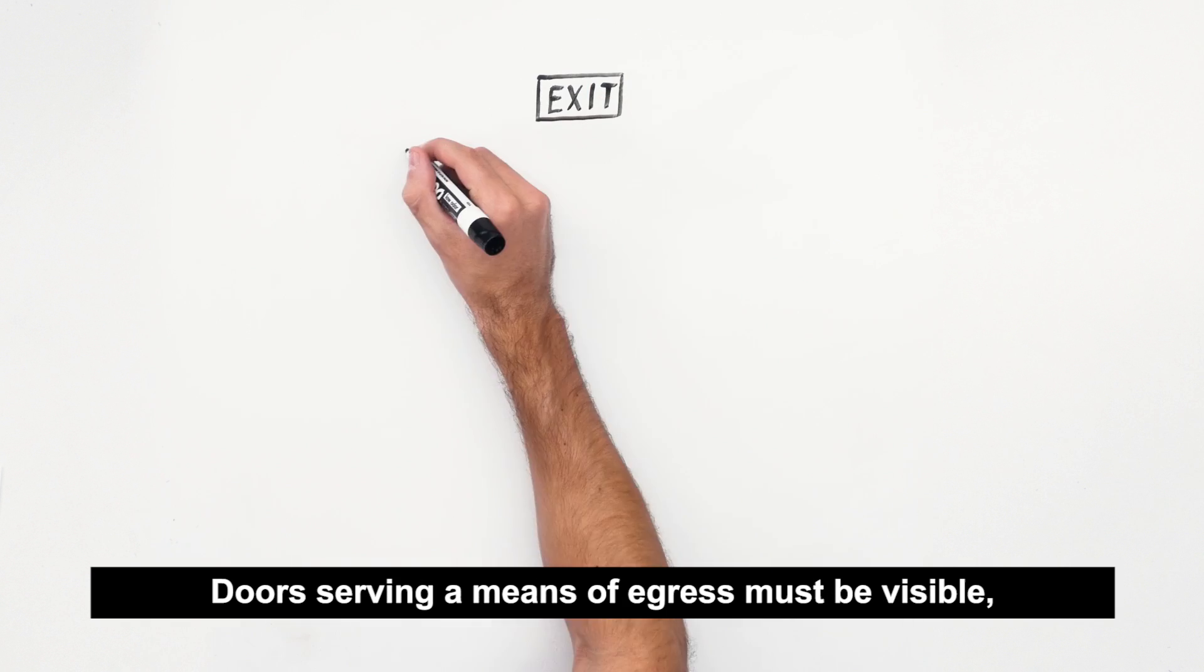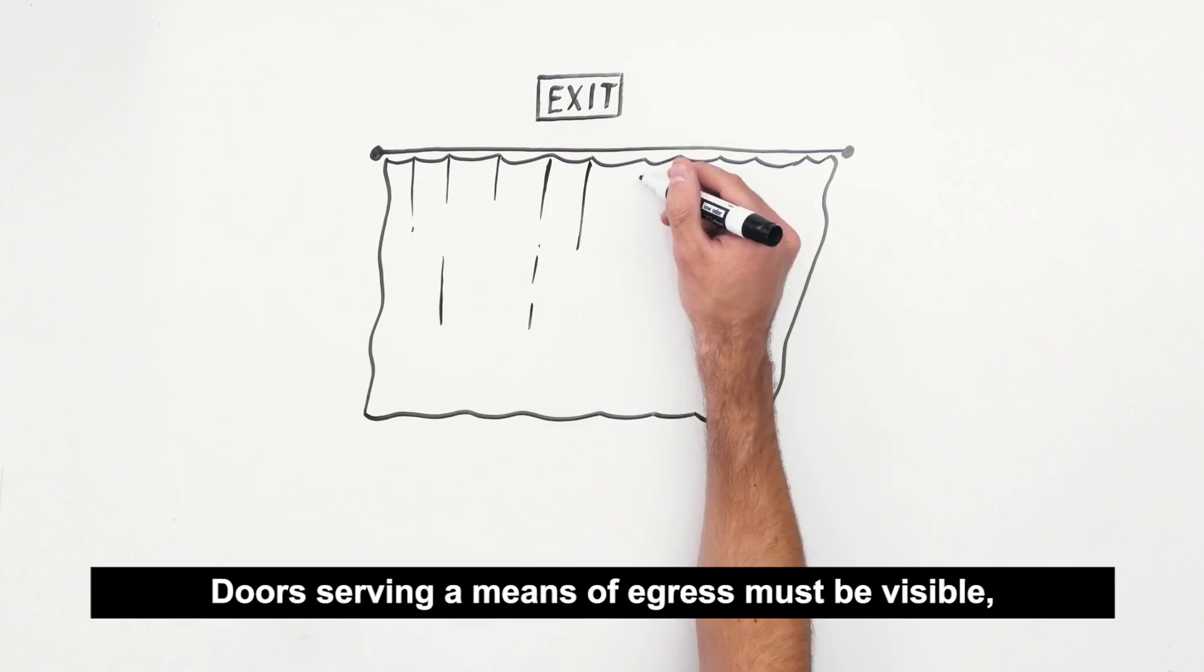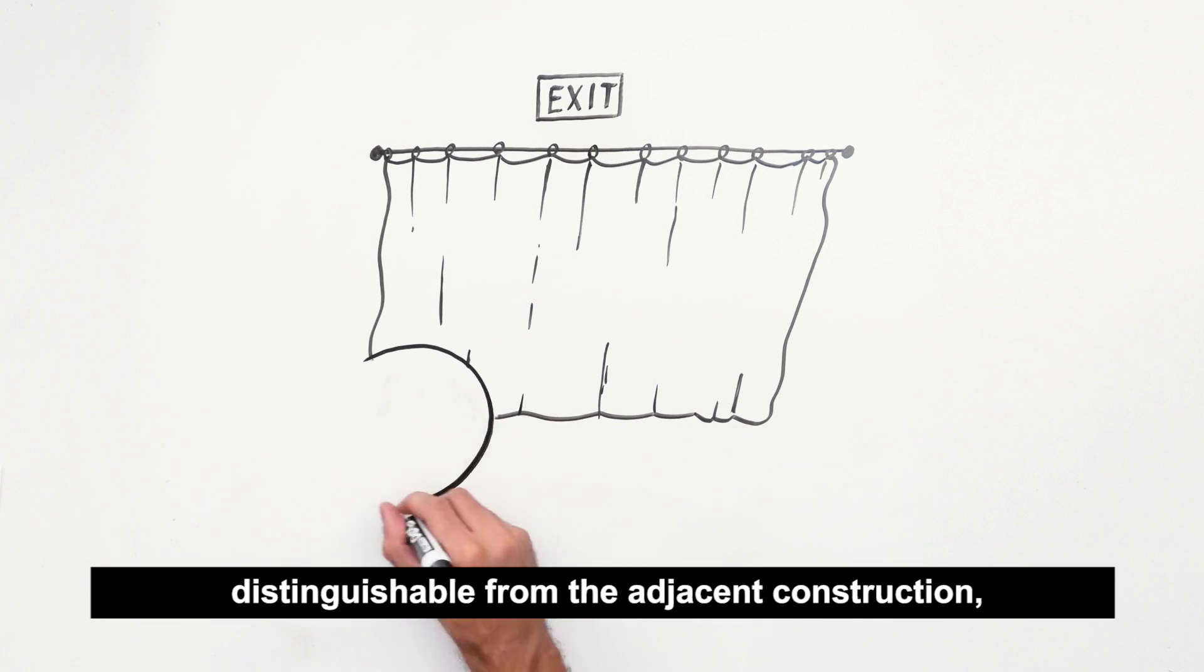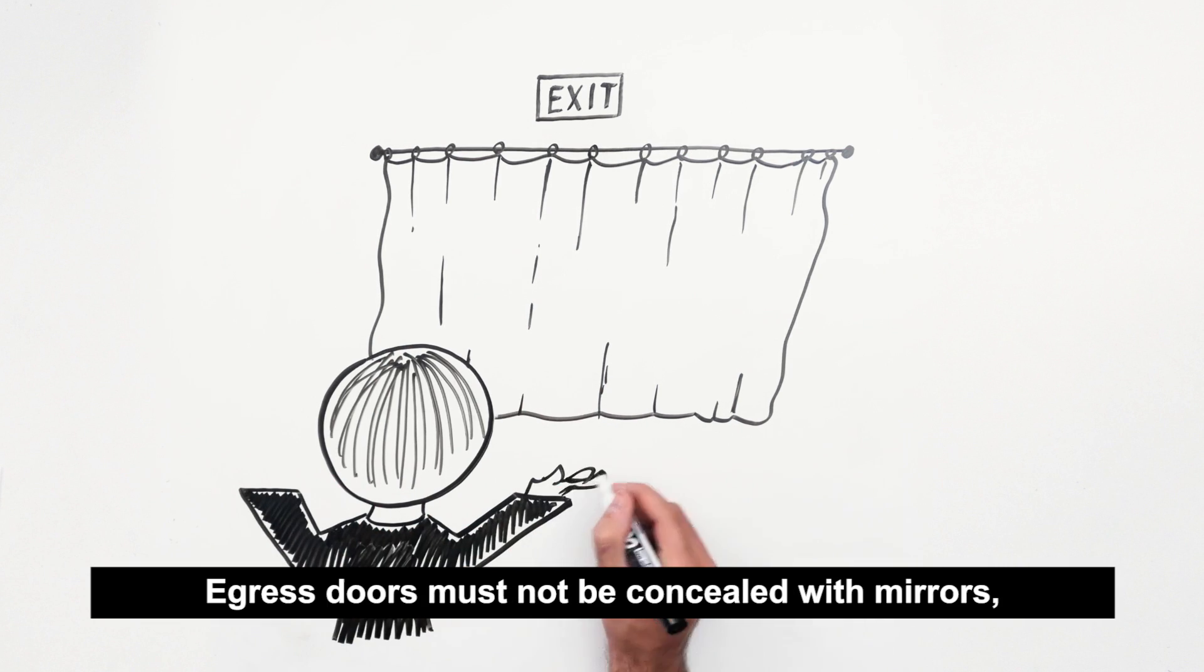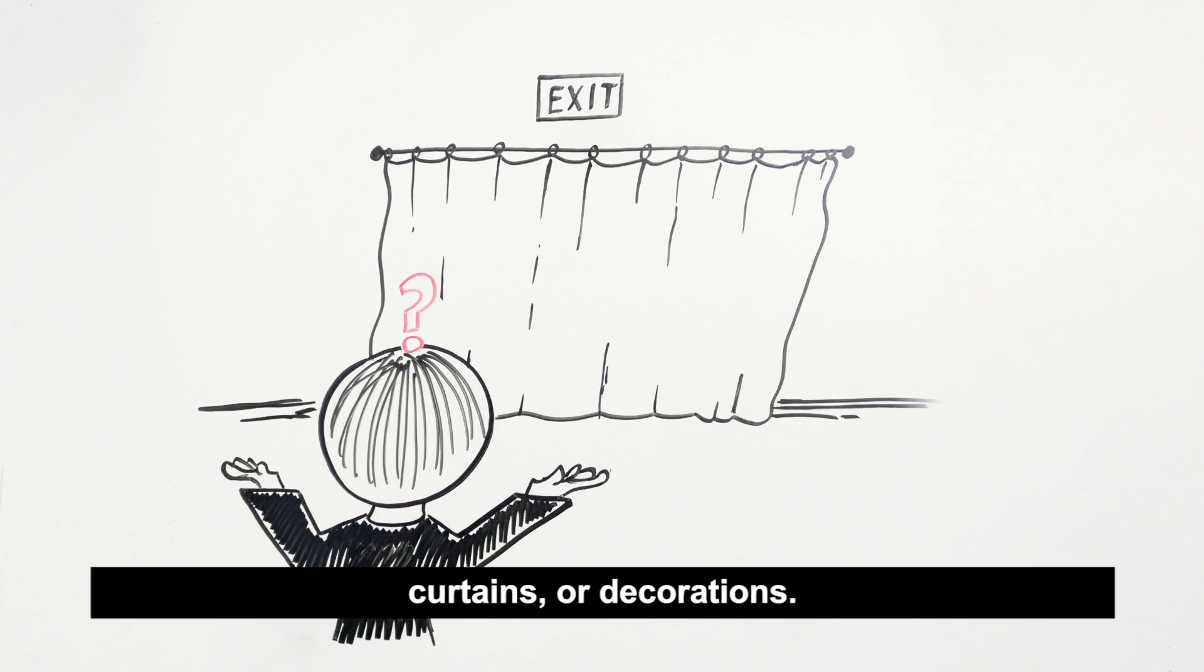Doors serving a means of egress must be visible, distinguishable from the adjacent construction, and recognizable as doors. Egress doors must not be concealed with mirrors, curtains, or decorations.